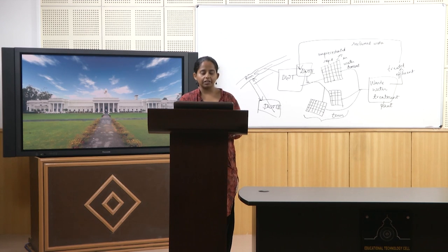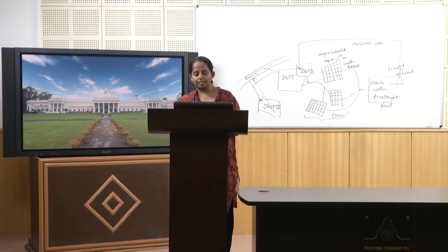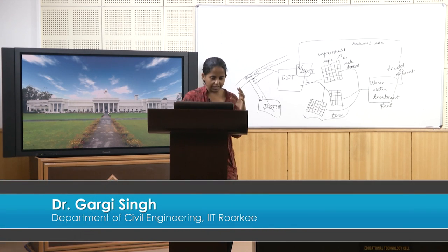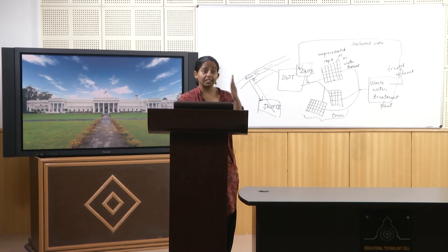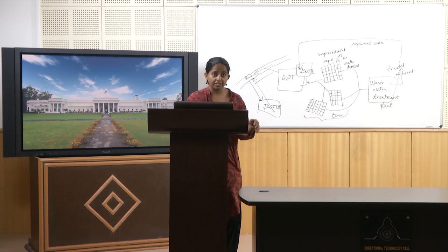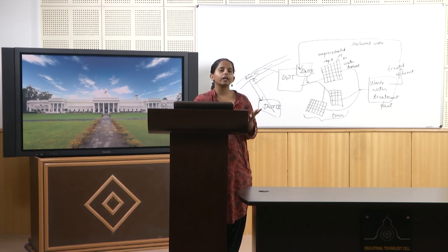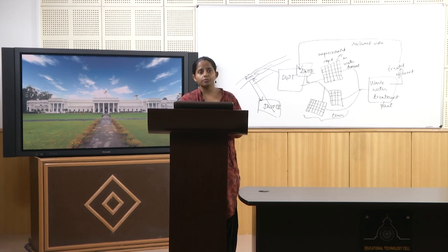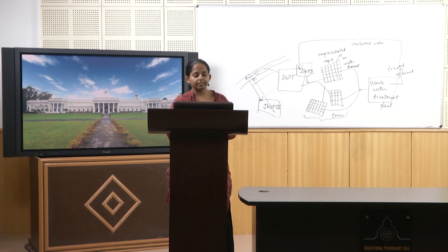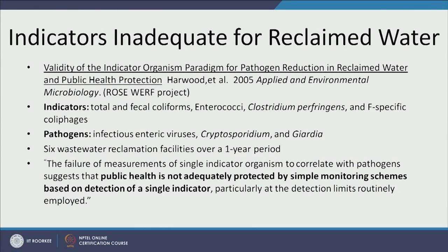Their conclusion was: 'The failure of measurements of single indicator organisms to correlate with pathogens suggests that public health is not adequately protected by simple monitoring schemes based on detection of a single indicator, particularly at the detection limits routinely employed.' In this one-year study, the fecal and total coliform indicators did not correlate well with actual presence of pathogens — they are inadequate when it comes to reclaimed water, and public health is compromised as a result.